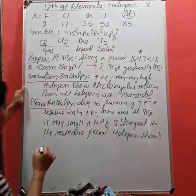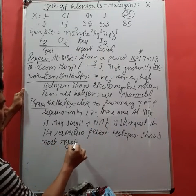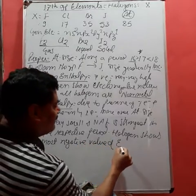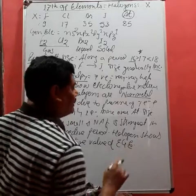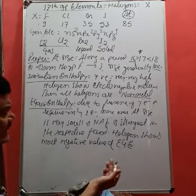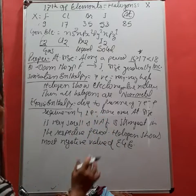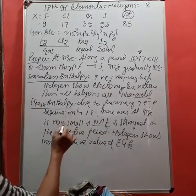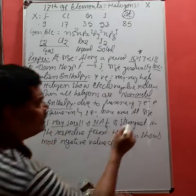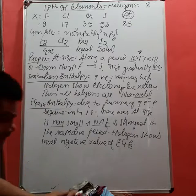Halogens show the most negative value of electron gain enthalpy. The electron gain enthalpy of halogens is very high compared to other elements of the same period. This is due to strong nuclear attraction force, very small size, and requiring only one electron to complete octet.